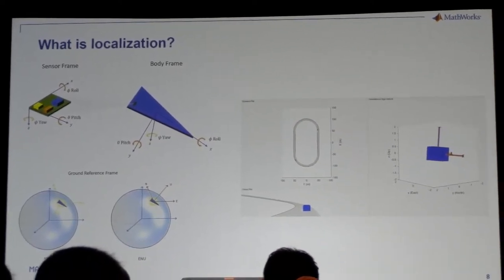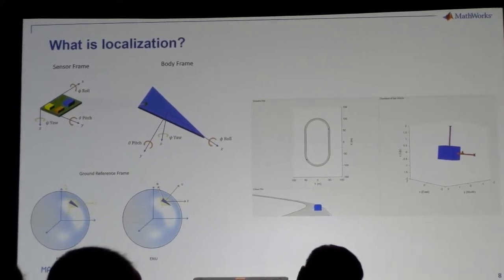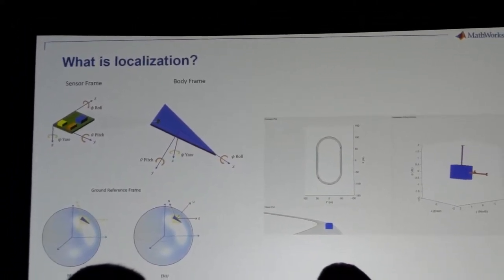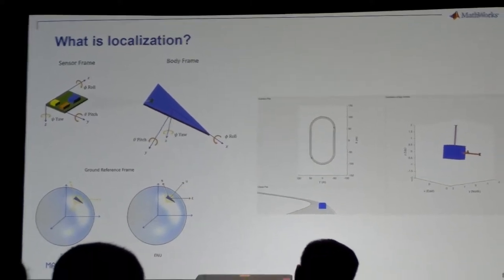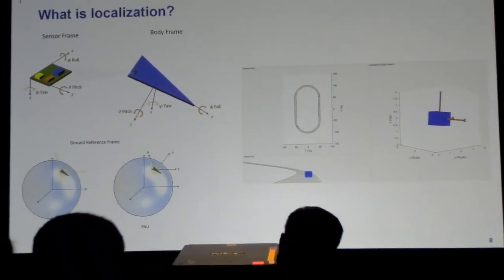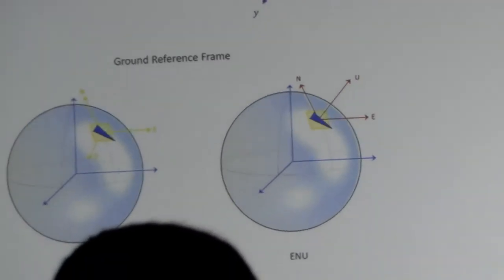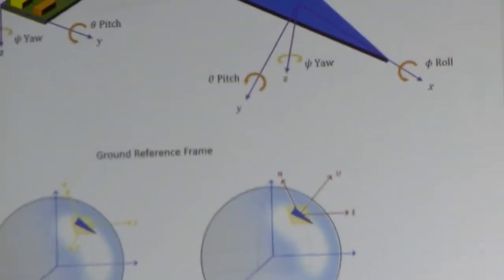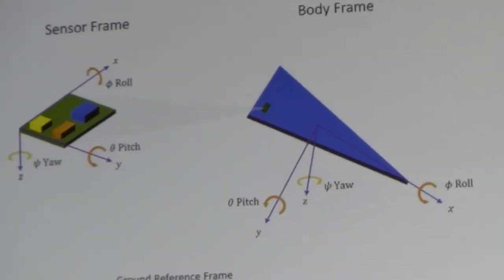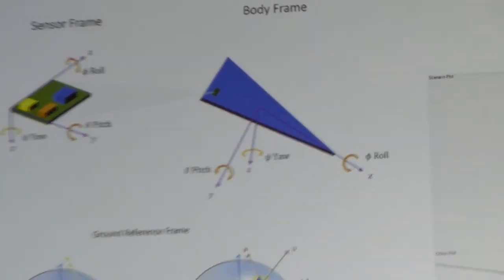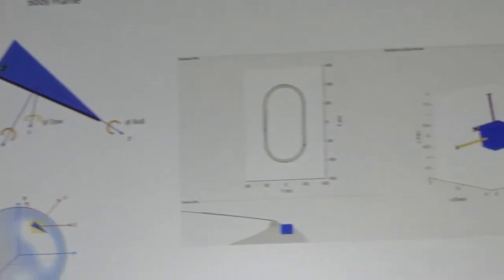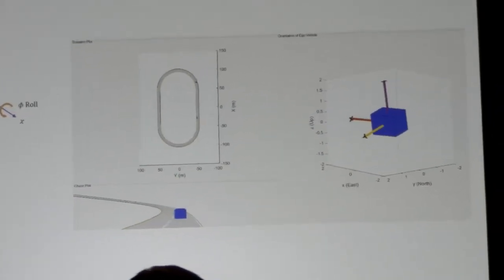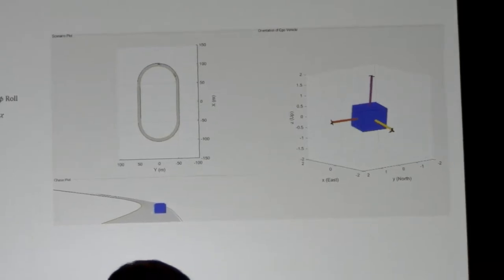It may have sensors mounted in different locations on the platform. So we need to consider that. When we put those platforms in motion together, interacting with other platforms, we need the concept of a global frame. So: sensor frame, body frame, and global frame. What you see here is an autonomous driving case going around a racetrack — notice the orientation as it goes around corners, and you can see the banking of the system.